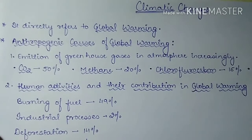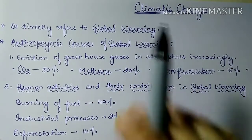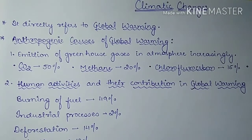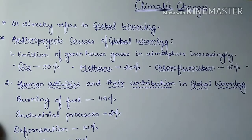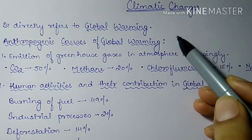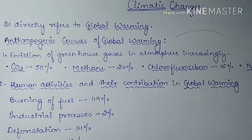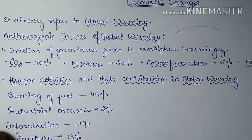Climate change directly refers to global warming. Various anthropogenic actions have caused large emissions of carbon dioxide and other greenhouse gases, which trap more heat energy, leading to a rise in Earth's temperature by 1 degree Fahrenheit from the last century. The first anthropogenic cause to examine is the emission of greenhouse gases.